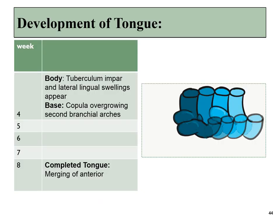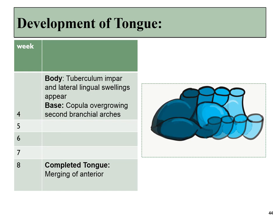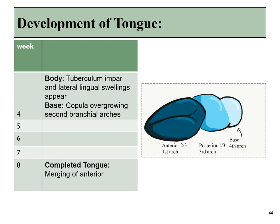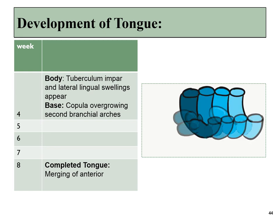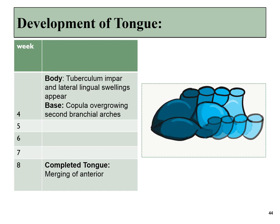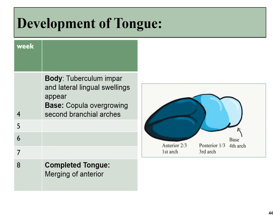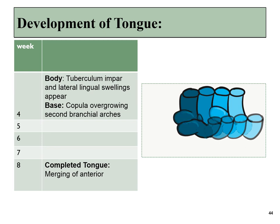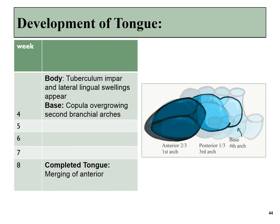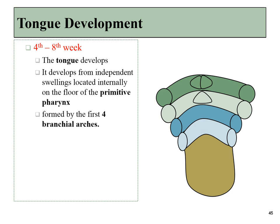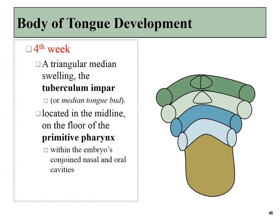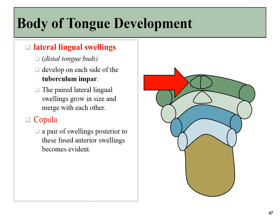Next up is the development of the tongue. Like the jaws, the tongue develops from the branchial arches, but in this case, it's more than just branchial arch one — the tongue develops from the first four branchial arches. The jaws develop from the branchial arches growing from the lateral edges towards the middle. The tongue doesn't begin developing until the arches fuse along the midline, and continues to grow from there. This takes place during weeks four through eight. First up is the formation of the tuberculum impar, which is a triangular swelling. Next, a pair of lateral lingual swellings develops off to the sides of the tuberculum impar and will continue to grow in size.